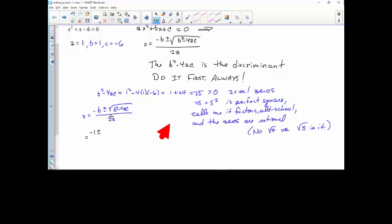So b is 1, so that's negative b is -1 plus or minus. Now the nice thing about this is there's no ugly square roots. You do the discriminant first and look, boom, it's right there.